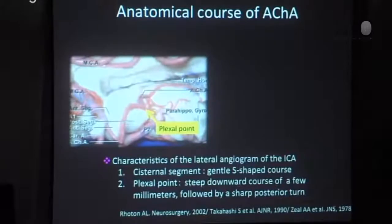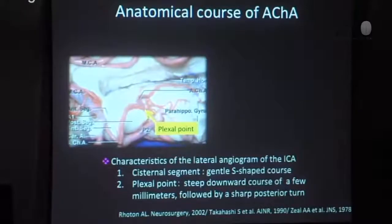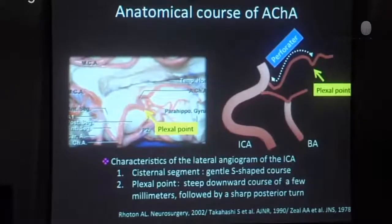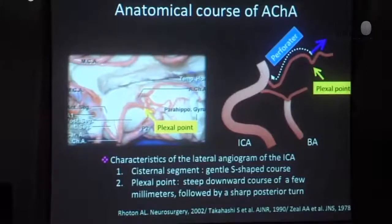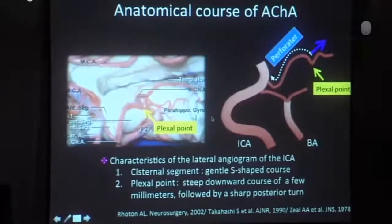The cisternal segment of the anterior choroidal artery takes a gentle S-shaped course on lateral angiogram. The plexal point is usually characterized by a steep downward course of a few millimeters, followed by a sharp posterior turn, marking the point of entry on lateral angiogram. The perforating branches of the anterior choroidal artery, passing through the anterior perforating substance to the globus pallidus and posterior limb of the internal capsule, arise from the cisternal segment and do not receive any significant collateral supply. Therefore, the catheter tip must be placed beyond the plexal point to avoid serious ischemic complications during AVM embolization through the anterior choroidal artery.